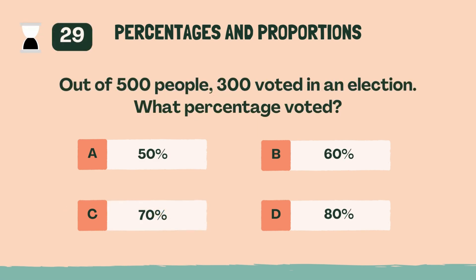Out of 500 people, 300 voted in an election. What percentage voted? B, 60%.